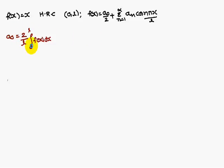a0 is equal to 2 by l integral 0 to l f(x) dx. But f(x) is x. 2 by l integral 0 to l x dx. Integral of x is x square by 2, between the limit 0 to l. So if you substitute the upper limit, what happens? Here 2 will get cancelled, 1 by l into l square minus 0. That implies a0 is equal to l.